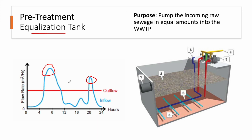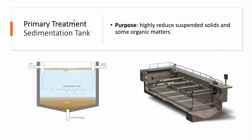During the evening, people return home and we have another peak of water usage, after which nighttime consumption drops again. These high daily fluctuations should not affect our wastewater treatment plant — we want an equal amount of water entering the plant each hour. For this we use an equalization tank: a simple tank where we collect the wastewater and use pumps to deliver equal amounts at regular intervals. Coarse bubble aeration is also used inside to minimize odors and avoid sedimentation of solid particles.